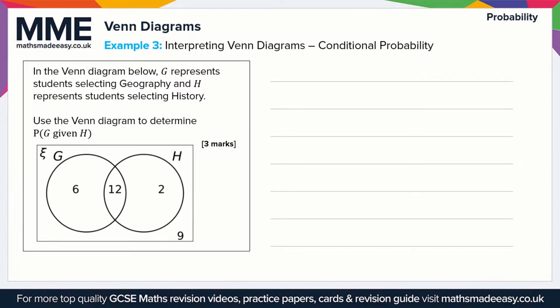So rather than considering everything in the Venn diagram, we're only considering this circle here, so the history circle as the kind of total, so we ignore everything else.